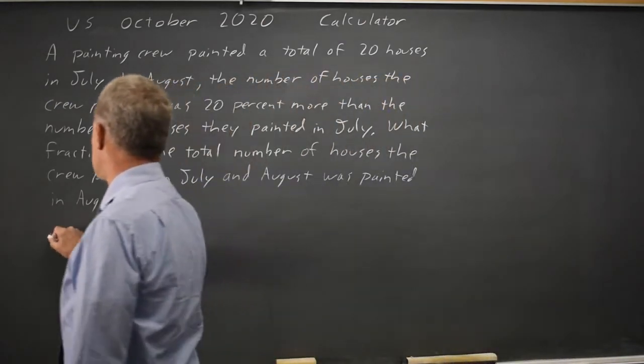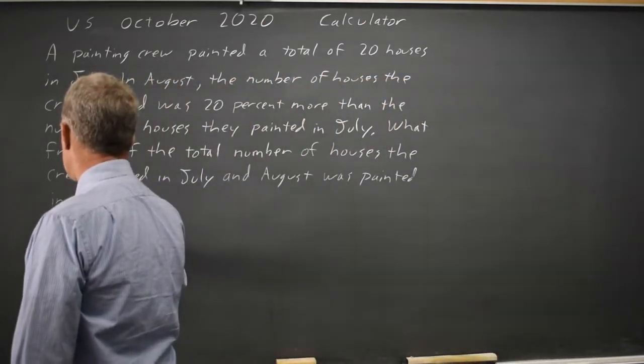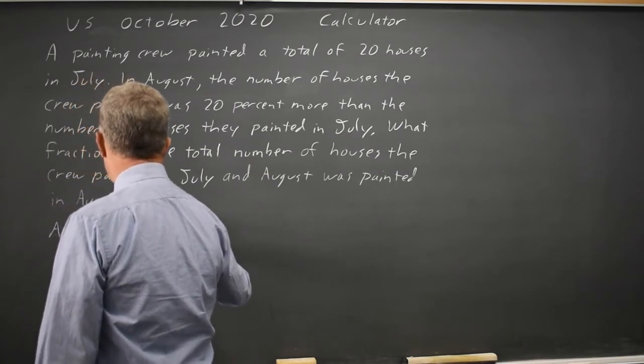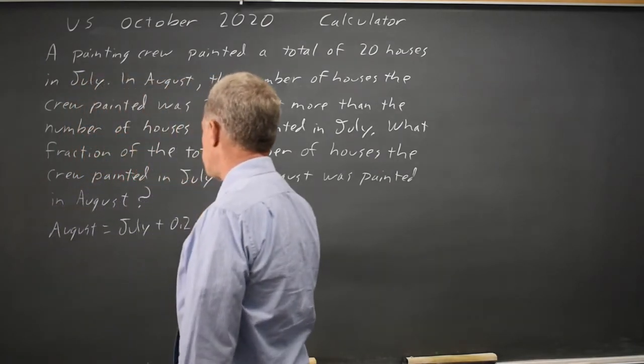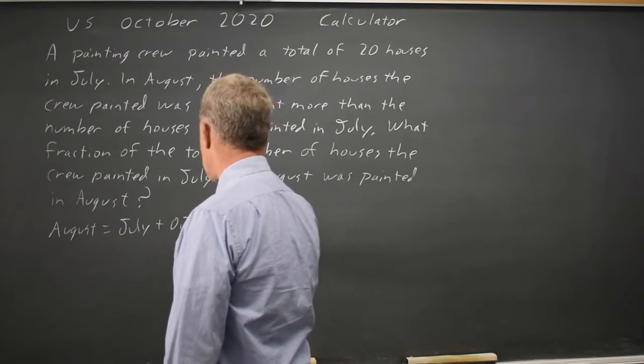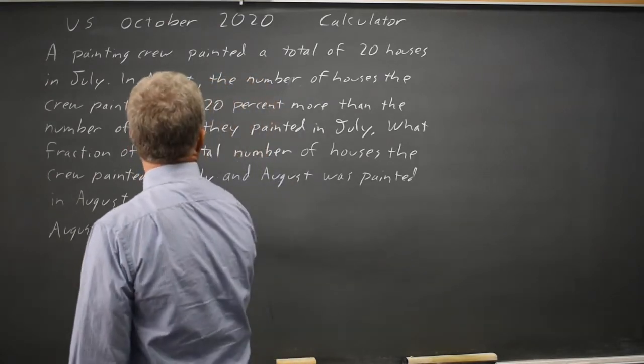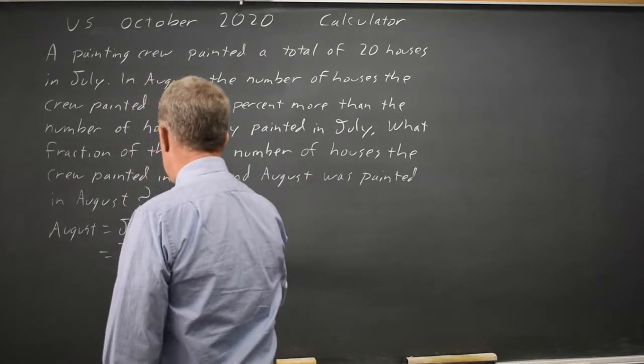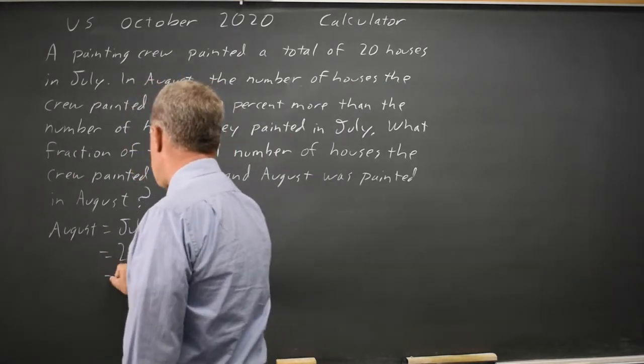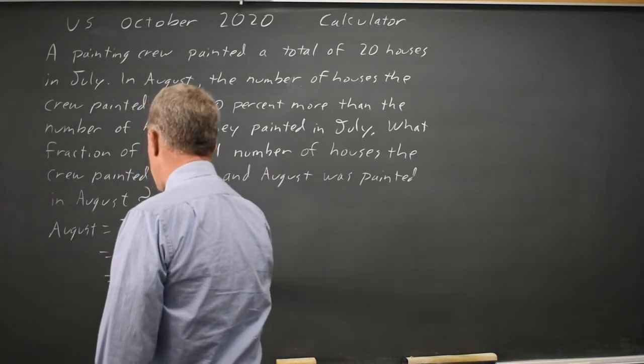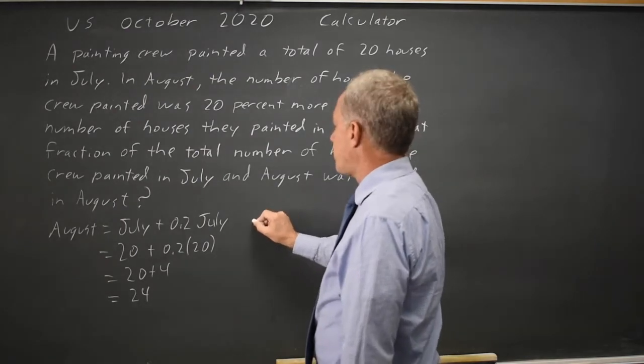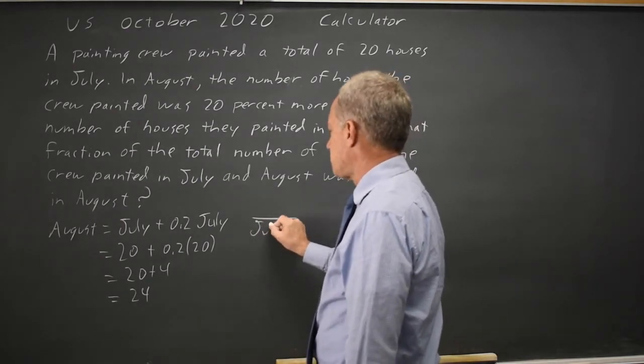So August equals July plus 20% of July, which is 20 houses plus .2 times 20, which is 20 plus 4 equals 24. And they're asking for what fraction of the total July and August,